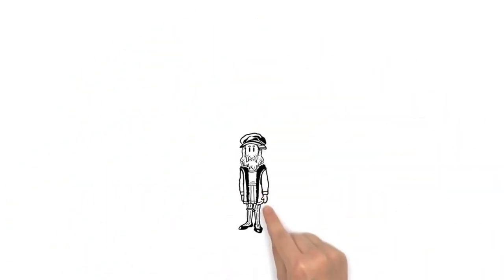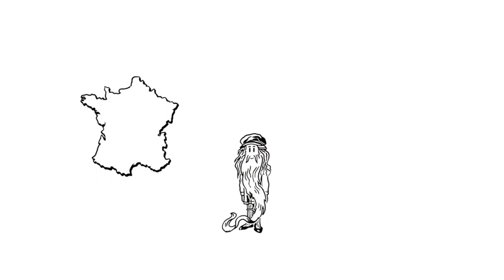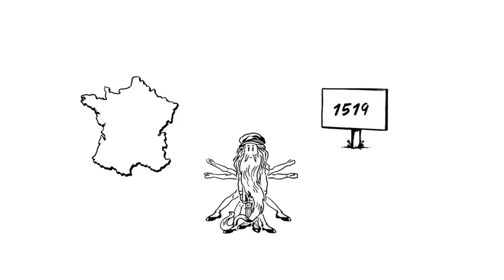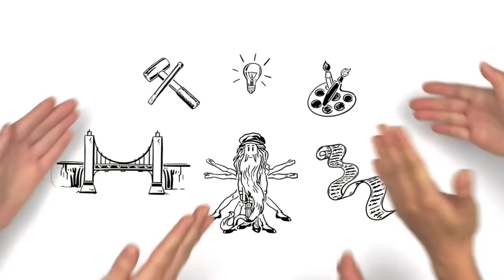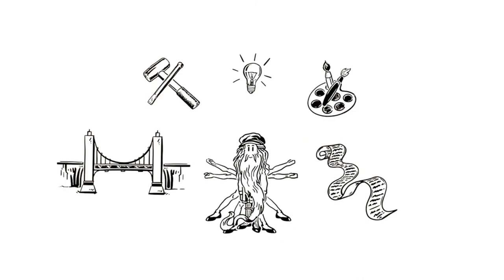He spent his final years in France. By his death in 1519, he had developed a legendary reputation as a Cuomo Universale, or Jack of all trades. To this very day, Leonardo da Vinci is widely considered to be one of the most extraordinary people of all time.